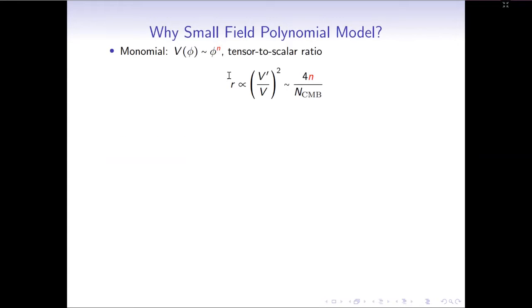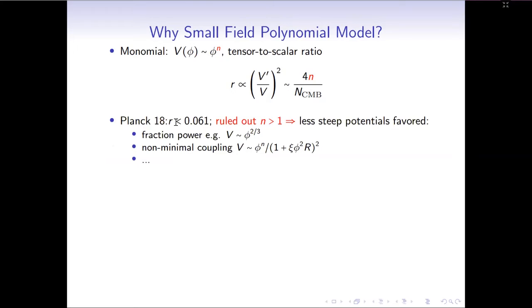So first, why small field polynomial model? For the most simple inflationary scenario, namely the polynomial with phi power n, the prediction for tensor to scalar ratio turns out proportional to the power n over N_CMB, where N_CMB is around 60. So considering the most recent bound for R, we say all the most simple scenarios with n larger than 1 are ruled out. So less steep potential are favored.